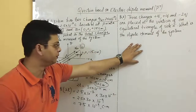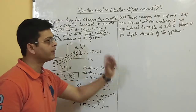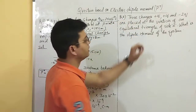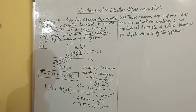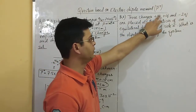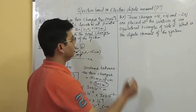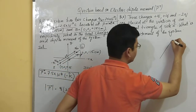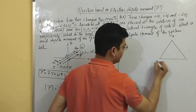Now let's come to the next problem. The dipole moment is a vector quantity, so we need to consider its direction carefully. In this problem, three charges — plus q, plus q, and minus 2q — are placed at the vertices of an equilateral triangle of side A. Vertex A has charge minus 2q, vertex B has plus q, and vertex C has plus q.